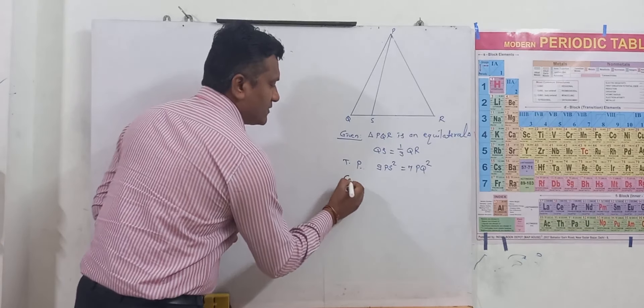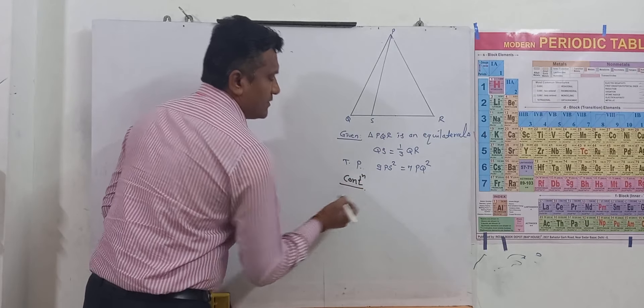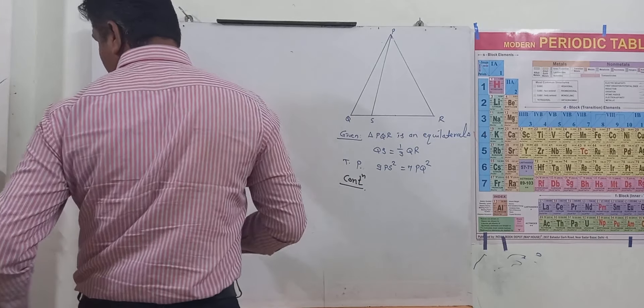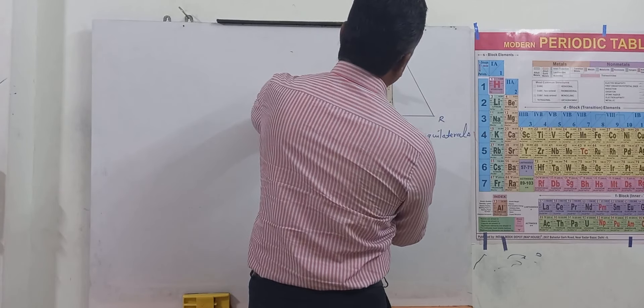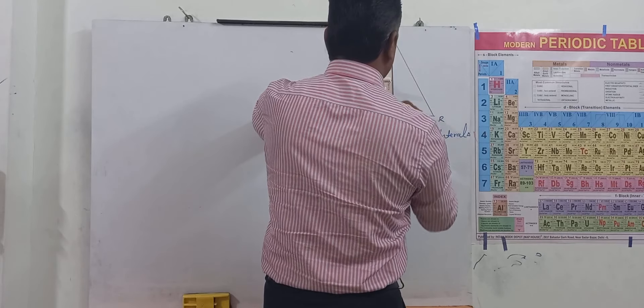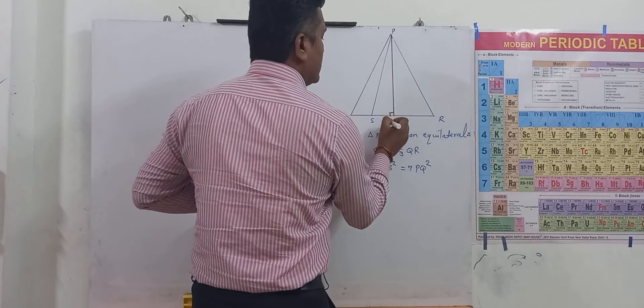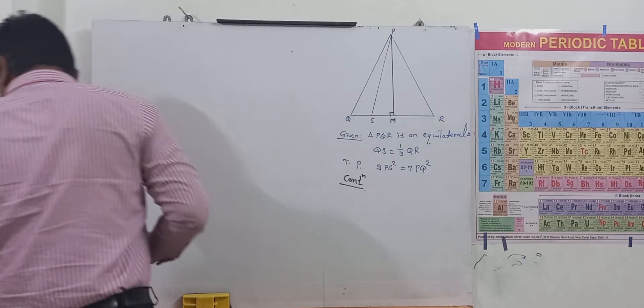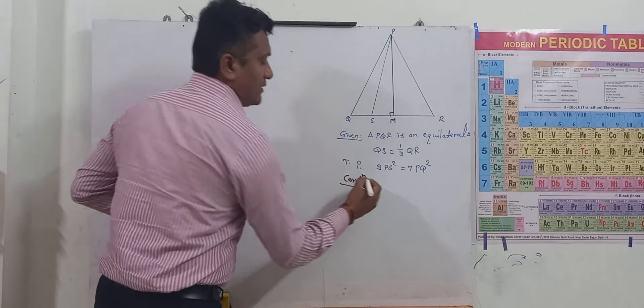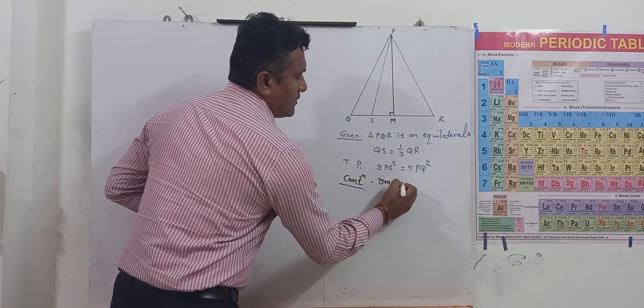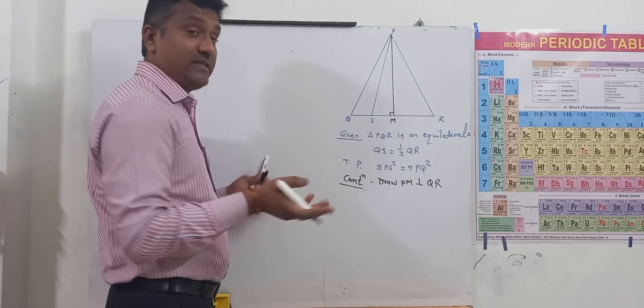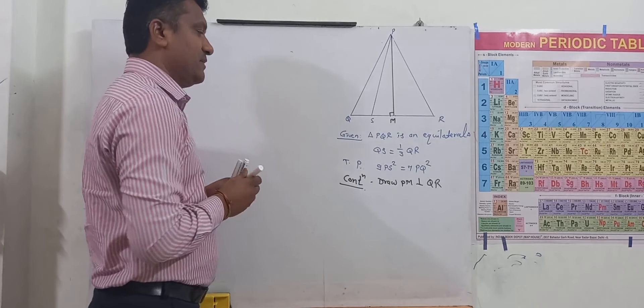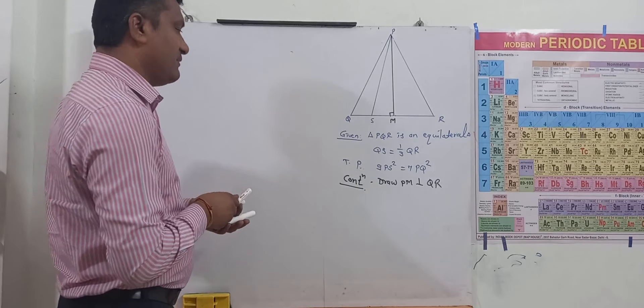So first we have to construct over here. In textbook already this construction is given here but it is not mentioned anything. So here we will draw this PN perpendicular to the QR. Draw PN perpendicular to QR. If it is given no issue about that one, if it is not given you have to construct this one. So this is the construction we have done it.